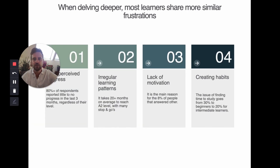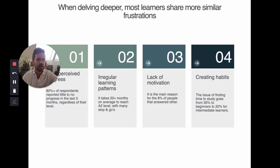We also found a few other key answers. The first is about the slow perception of progress: more than 80% of respondents reported little or no progress in the last three months, which is interesting and important. Connected to that is the issue of irregular learning patterns.